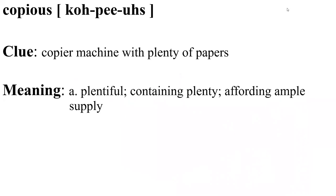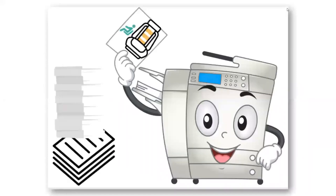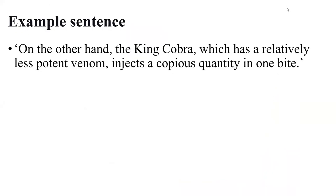Copious. Clue: copier machine with plenty of papers. Copious means plentiful, containing plenty, affording ample supply. Visualize the copier machine with an ample supply of papers and designs. On the other hand, the king cobra, which has a relatively less potent venom, injects a copious quantity in one bite. This example is about the king cobra, which is known to inject an ample quantity of venom in one bite.